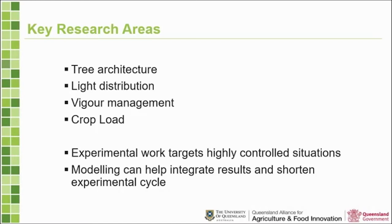Our key research areas to understand what's going on with these trees include architecture — a basic study but quite different from apple trees. For one thing, these trees keep their leaves, so unlike apples which drop their leaves and let you examine architecture easily, with our trees the leaves are retained and it's a much more detailed study. That architecture then builds a canopy through which light moves, and we're trying to make these trees smaller and control them in different ways, so light distribution is an important thing we're manipulating.